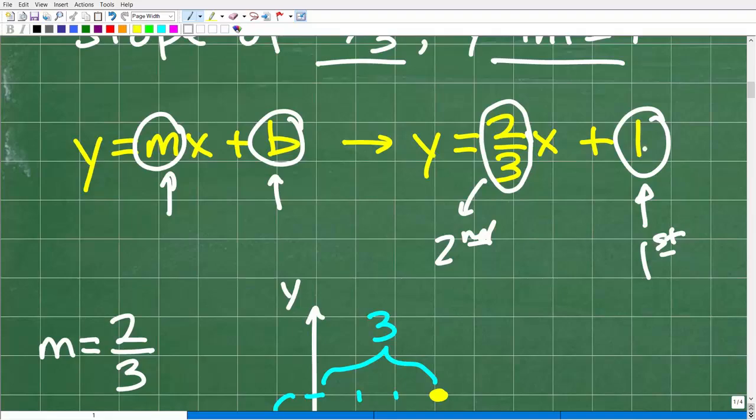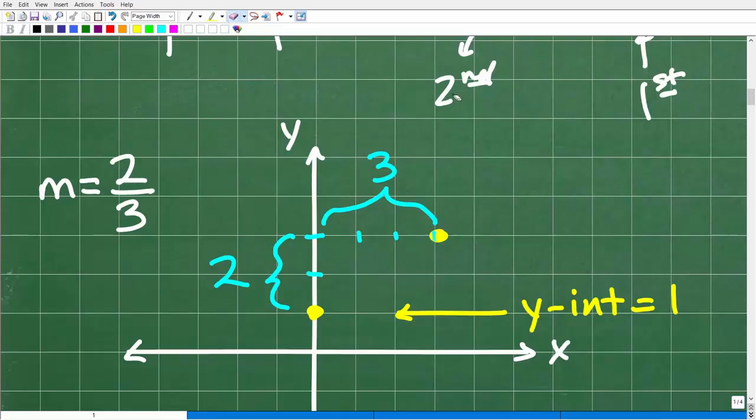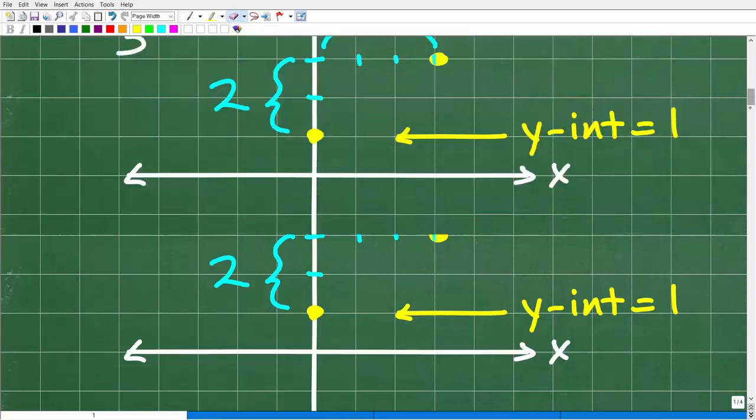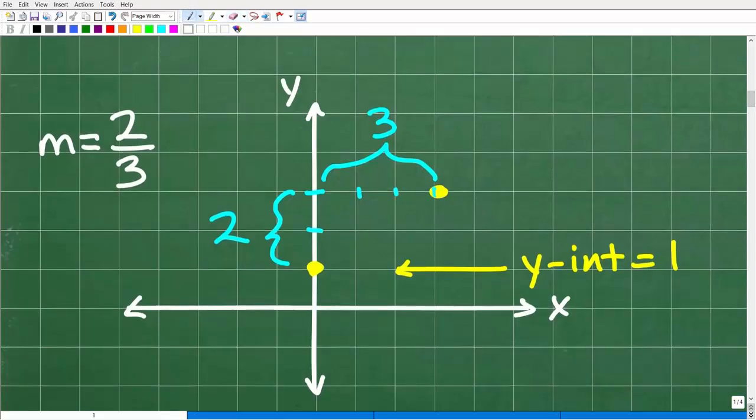Then we'll have our two points and then we can graph the line. So again, we're going to start with the y intercept as our first point. We're going to plot that. Then we're going to use the slope information as kind of a set of driving directions. And we're going to start from the first points location, and then we're going to arrive at a second point, and then we'll be able to graph this line. It's going to be easier to kind of see this in action. So let's go ahead and do this right now.